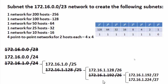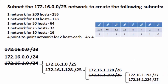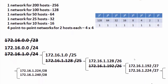I still need a subnet for 10 hosts. Taking the second 32-host subnet (172.16.1.224/27) and subdividing it into two 16-host subnets by changing the mask from /27 to /28, I now have 172.16.1.224/28 and 172.16.1.240/28.